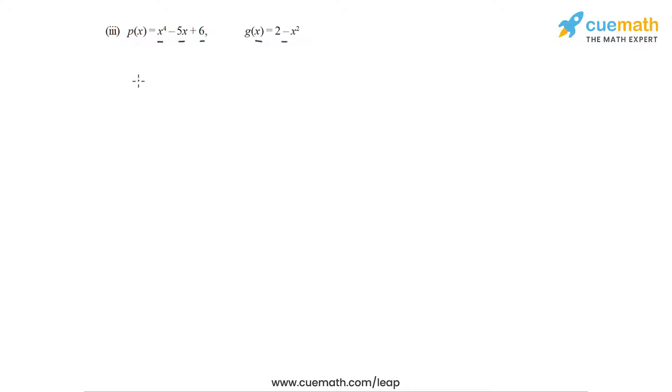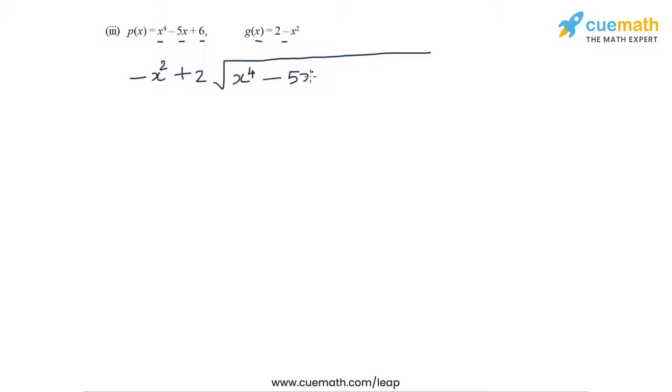In Part 3, the dividend polynomial is x⁴ - 5x + 6 — there is no cubic term and no quadratic term. The divisor is 2 - x², a quadratic polynomial. We write the divisor with terms in order of degree as -x² + 2, and the dividend as x⁴ - 5x + 6.